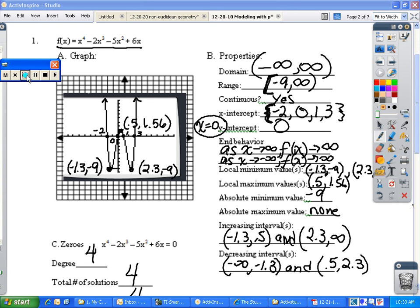So for the next one, we have local minimum value and local maximum value. You have two local minimum values at negative 1.3, negative 9 and 2.3, negative 9. Notice your absolute minimum value is at negative 9 using, of course, that y value for the very lowest point on your graph. Your local maximum value is up here at 0.5, 1.56. And there is no absolute max because this graph keeps going up in both directions.